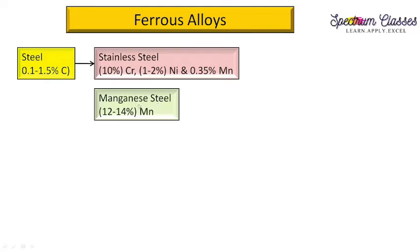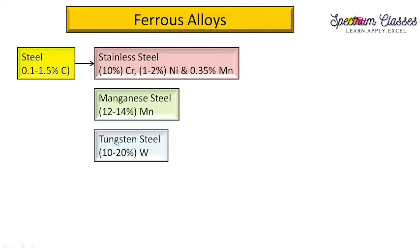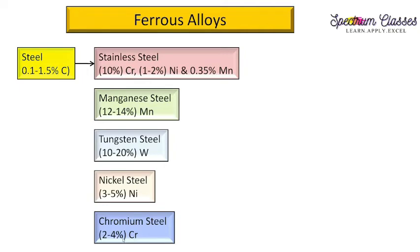Manganese steel contains iron, carbon, and 12–14% manganese. Tungsten steel has 10–20% tungsten added to iron and carbon. Nickel steel has 3–5% nickel, and chromium steel has 2–4% chromium added to iron and carbon. These different compositions give different properties — for example, tungsten steel is very hard — and they are used in different applications accordingly.